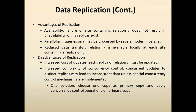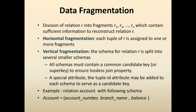The disadvantages of replication include an increase in the cost of updates, since each replica of relation R must be updated. There is also increased complexity of concurrency control, as concurrent updates to distinct replicas may lead to inconsistent data unless special concurrency control mechanisms are implemented. The solution is to choose one copy as the primary copy and apply concurrency control operations on that primary copy.